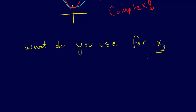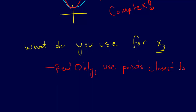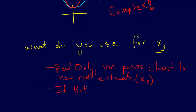In other words, what points do you use? You have three points, you fit a quadratic and find the roots, but then you're going to go through another iteration after you've estimated the roots. You're going to evaluate the function at your estimated roots and try again. So what do you use for x3? The answer is: if you're only finding real roots, use the points closest to the new root estimate, and that's going to be x3.